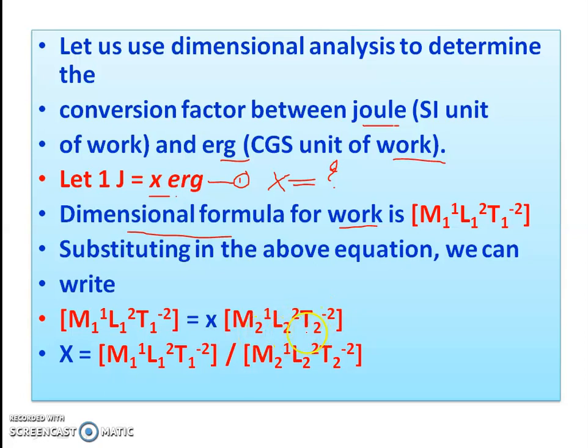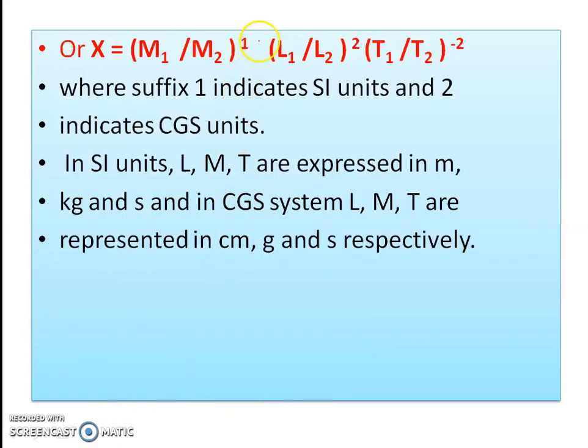In CGS system, x equals M to the power 1, L to the power 2, T to the power minus 2 divided by M to the power 1, L to the power 2, T to the power minus 2. This gives us M1 upon M2 to the power 1, L1 upon L2 to the power 2, T1 upon T2 to the power minus 2.